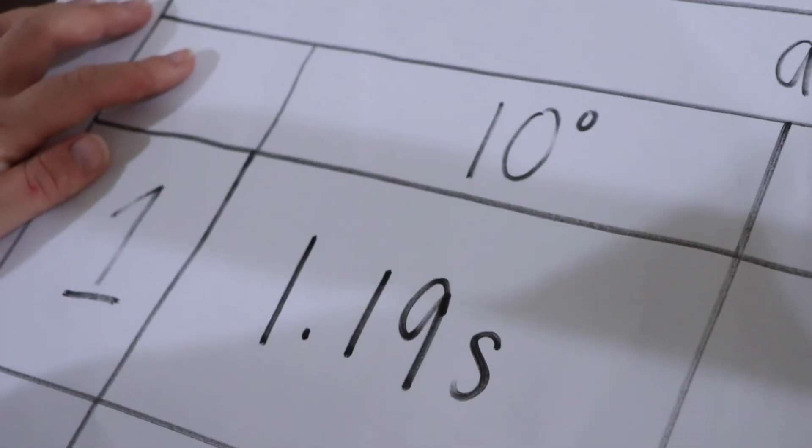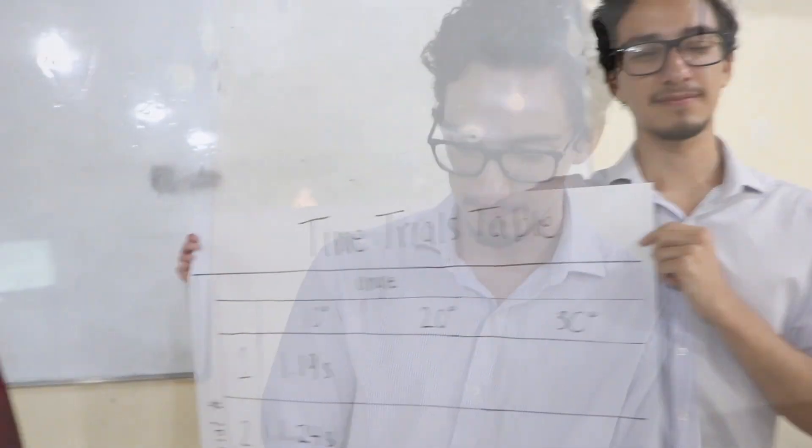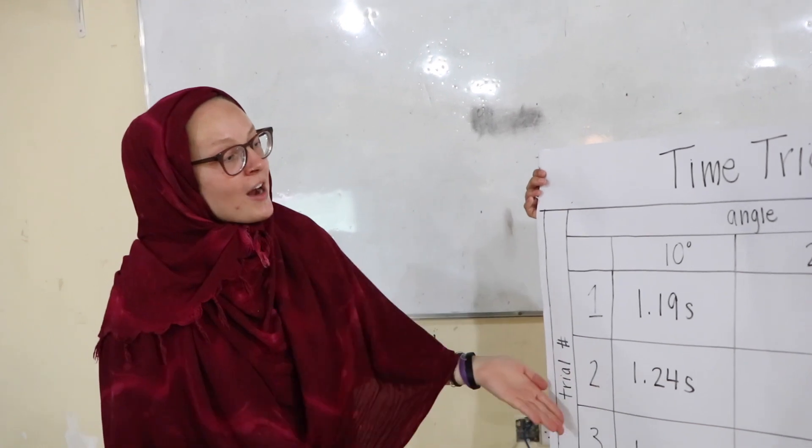We're going to start by setting up the PVC tube at a 10-degree angle using a protractor — remember that a protractor is a measurement tool for measuring angles. Now that it's set up, we're going to do three trials at each of the three angles. Feel free to record data along with us. Trial one: 1.19 seconds. Trial two: 1.24 seconds. Trial three: 1.22 seconds. Here are our results after our three trials at 10 degrees.